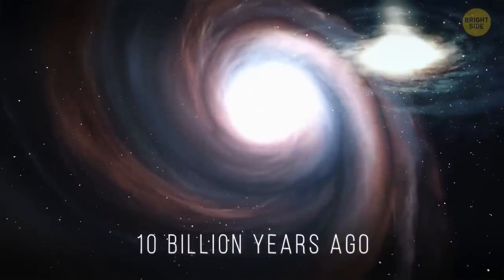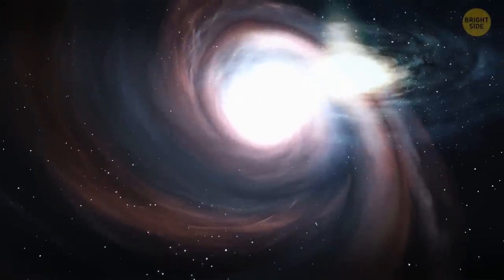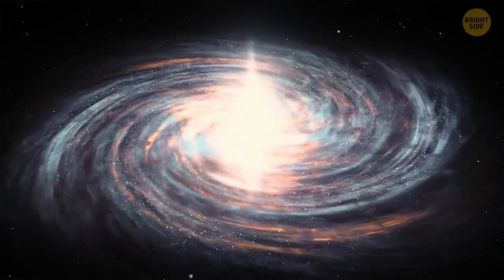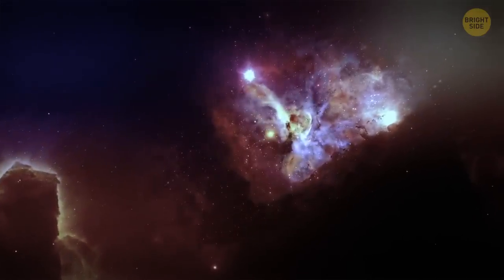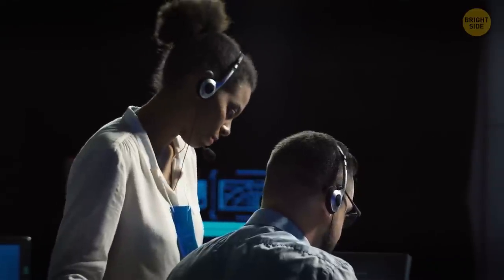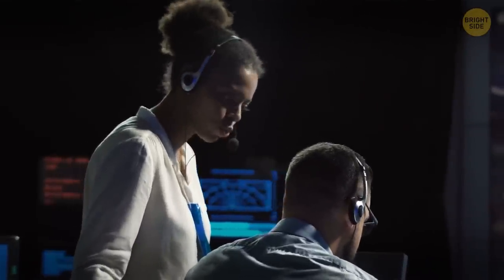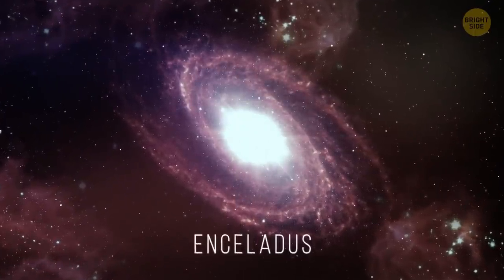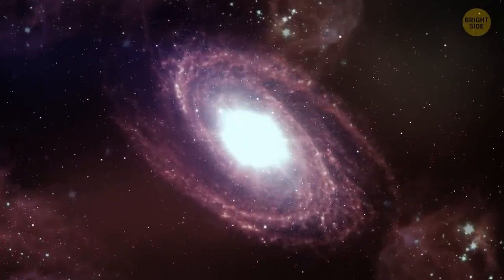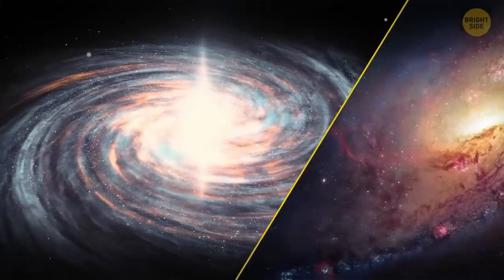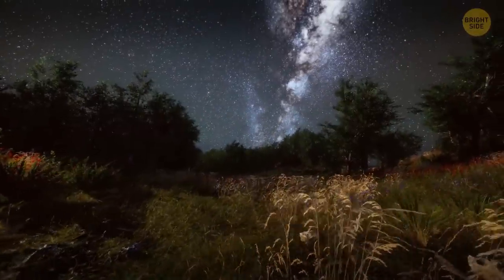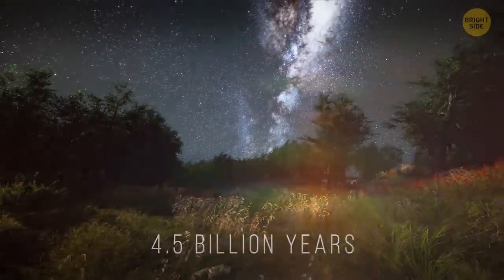Ten billion years ago, our home galaxy also went through a collision. That's why now its halo isn't like the ones other spiral galaxies have. Scientists first thought it was several small collisions. But then, they realized that most of these space objects in the Milky Way came from a single source. It was another galaxy, Enceladus, that the Milky Way collided with. The Milky Way and Andromeda galaxy might collide, but it's unlikely to happen in the next 4.5 billion years.